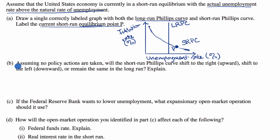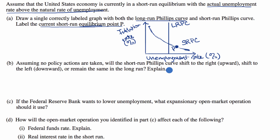Part B says: assuming no policy actions are taken, will the short-run Phillips curve shift to the right or upward, shift to the left and downward, or remain the same in the long run? Explain. Pause this video again and see if you can work through that before I do.